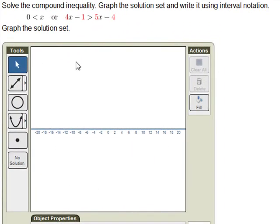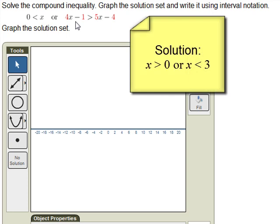Let's look at one more example. In this case, when we solve the second inequality, we get x is less than 3, and so we have two inequalities to put together: x is greater than 0, which looks like this, and x is less than 3, which looks like this.